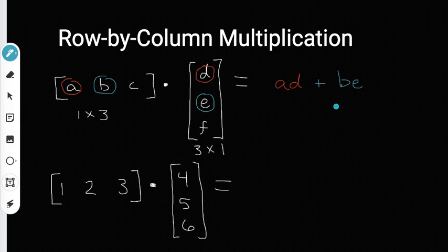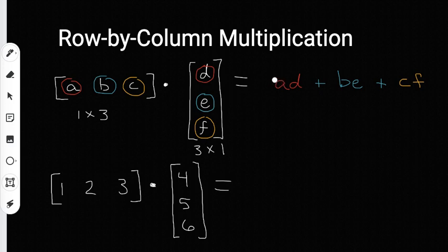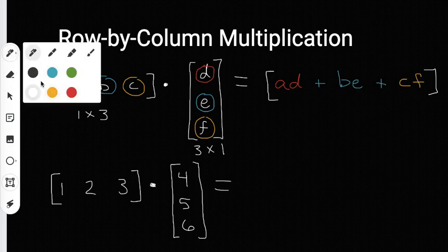Notice how we're multiplying. The last thing we're going to add is the third components. I'm going to change color to yellow and circle the third components — we multiply C and F to get CF, and then we're done. Since I have a matrix for my answer I'm going to put up the brackets and then I'll be done. Whenever you multiply a matrix by a matrix you also want to make sure that the dimensions match up.